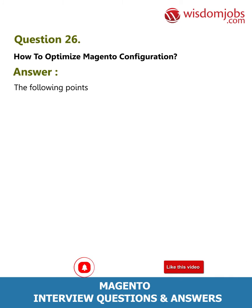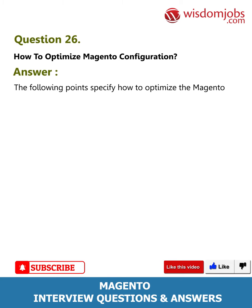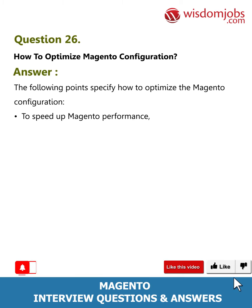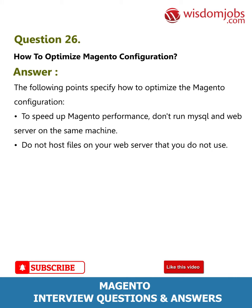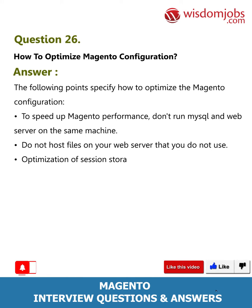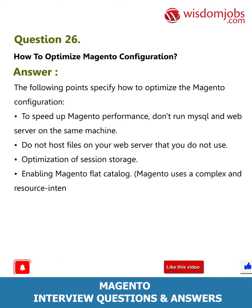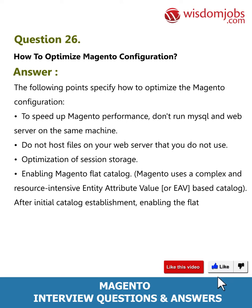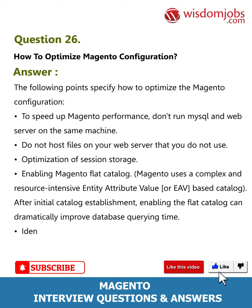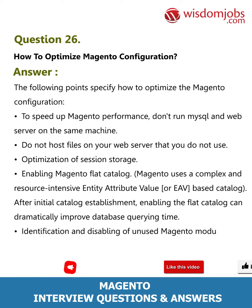Question 26: How to optimize Magento configuration? Answer: Do not run MySQL and the web server on the same machine. Do not host files on your web server that you do not use. Optimize session storage. Enable Magento flat catalog — Magento uses a complex, resource-intensive Entity Attribute Value (EAV) based catalog; after initial catalog establishment, enabling the flat catalog can dramatically improve database querying time. Also, identify and disable unused Magento modules.